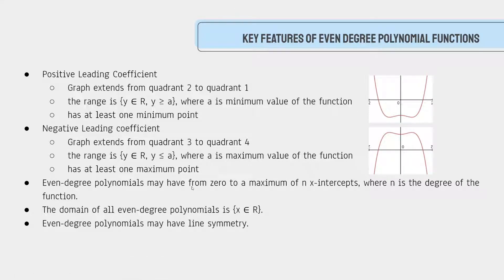Even-degree polynomial functions may have from zero to a maximum of n x-intercepts, where n is the degree of the function. For example, a parabola could start above the x-axis and go up, or start below the x-axis and go down, so it would have zero roots. The domain of all even functions is x is an element of all real numbers. Even-degree polynomial functions may also have a line of symmetry.